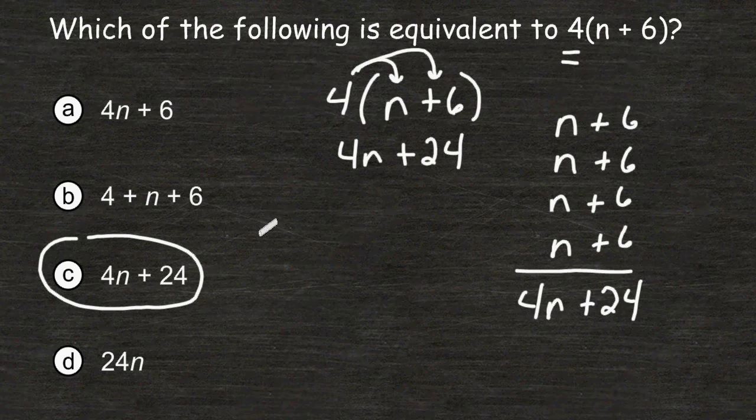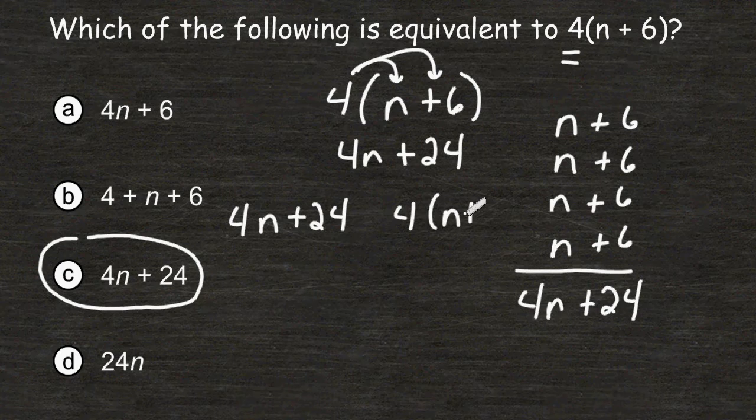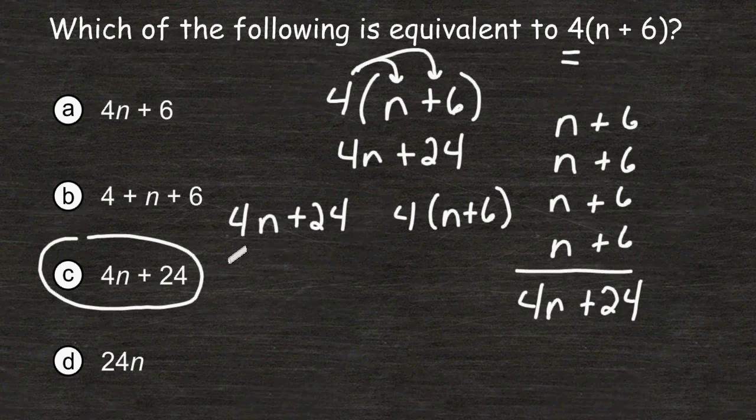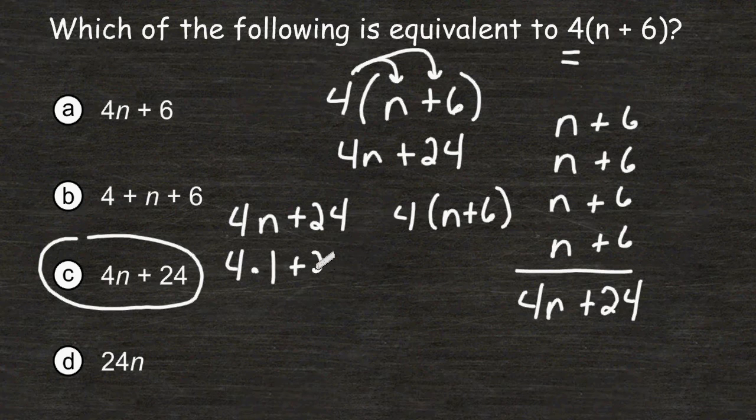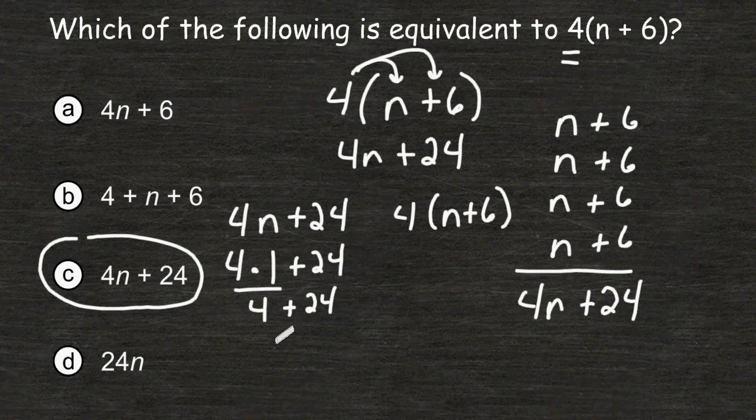And just to make sure that we have selected the correct answer, we can take choice C and substitute any value we want for n, and substitute that same value for n in the original expression. So I'm going to substitute the number 1 for the variable n. If we do that, we would now have 4 times 1 plus 24. 4 times 1 is 4, and 4 plus 24 is 28.